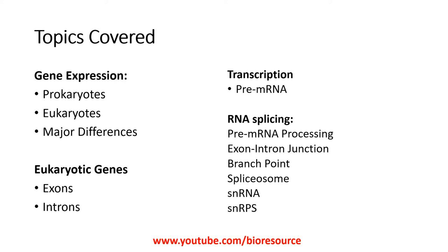We will cover the explanation about exons, introns, transcription, and formation of pre-mRNA, and then we will look at RNA splicing. In RNA splicing there are multiple different steps involved — the pre-mRNA processing — and we will go through the details about exon-intron junctions, branch point, spliceosome, and small nuclear RNAs.